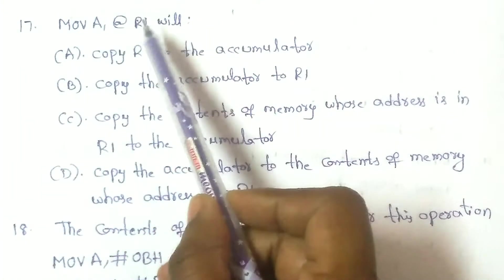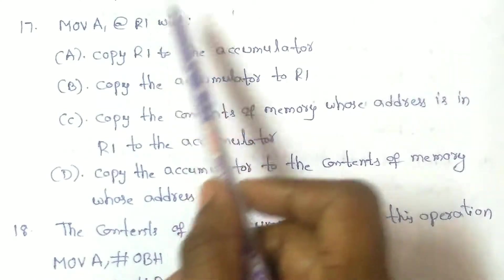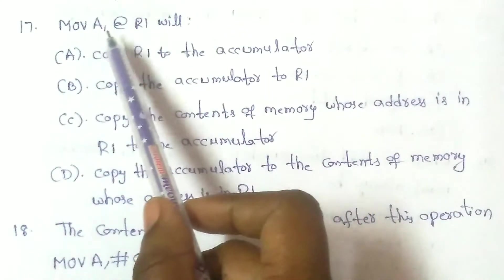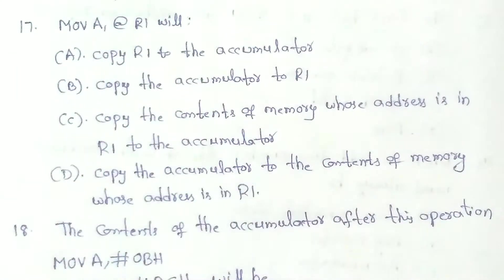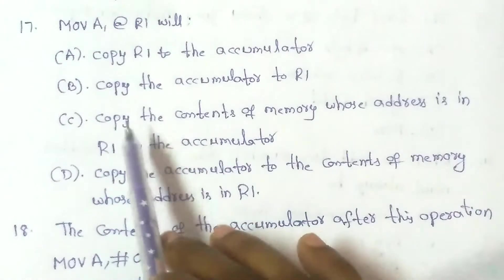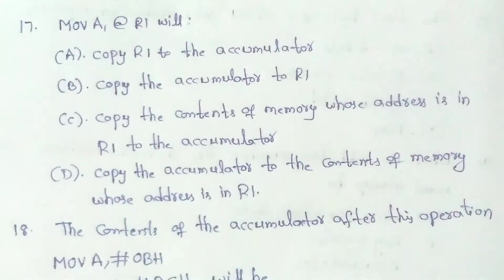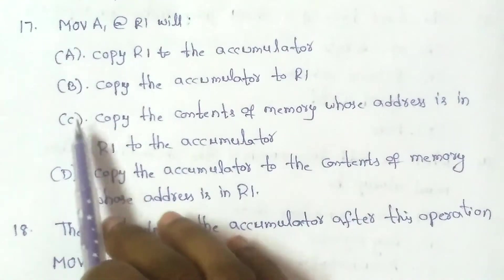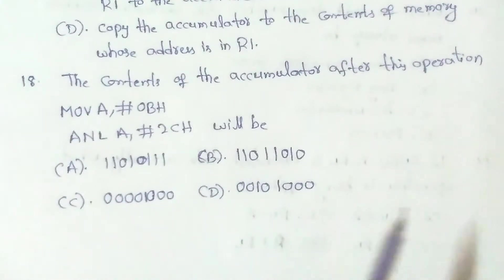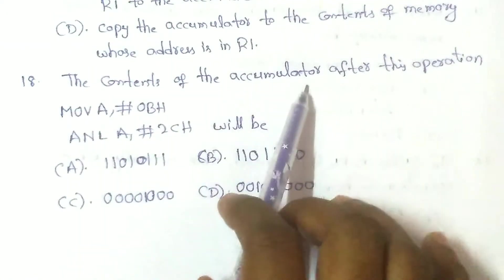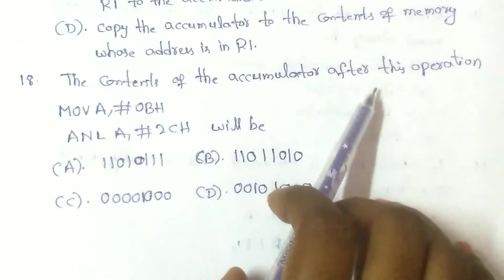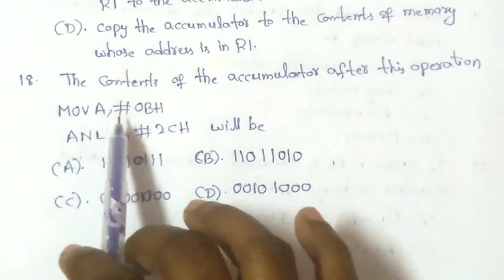The correct sentence is: 'Copy the contents of memory whose address is in R1 to the accumulator.' Answer: option C is the right answer.